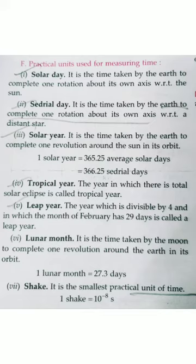For measuring time, the solar day is the time taken by the earth to complete one rotation about its own axis. The sidereal day is the time taken by the earth to complete one rotation about its own axis with respect to a distant star. Solar year is one complete revolution of the earth around the sun. Tropical year is the year in which there is a total solar eclipse. Leap year is divisible by four, and the month of February has 29 days.